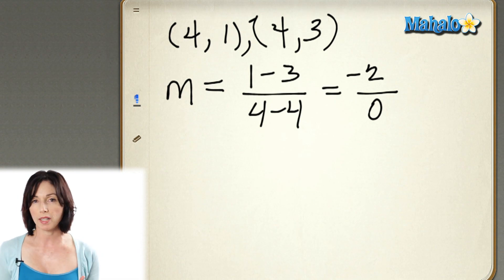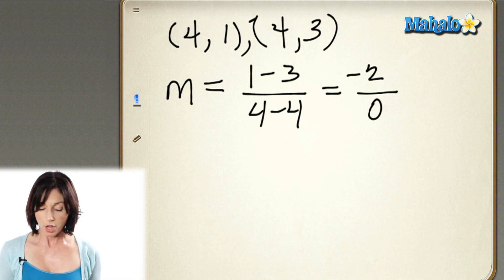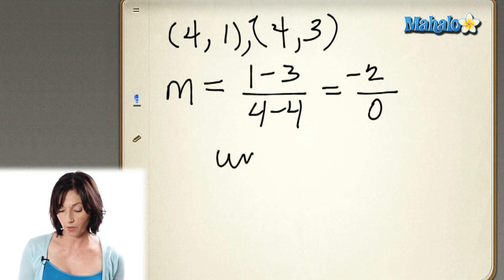But we're trying to divide by 0, and that's not defined. So here we have a slope that is undefined.